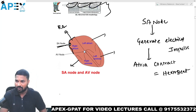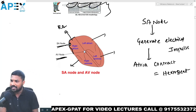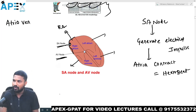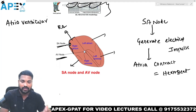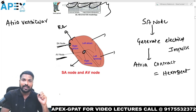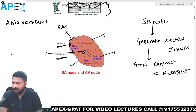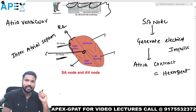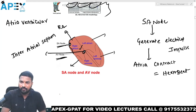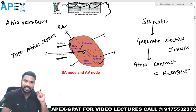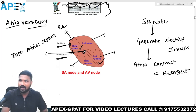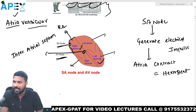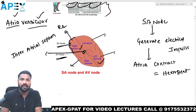In the diagram you can observe another node, the AV node, which stands for atrioventricular node. The AV node is located in the inferior inter-atrial septum. It conducts impulses between the atrium and the ventricles — that is why it is specifically called the atrioventricular node.